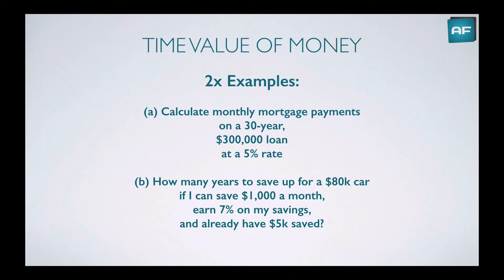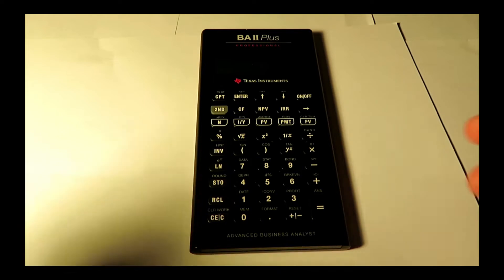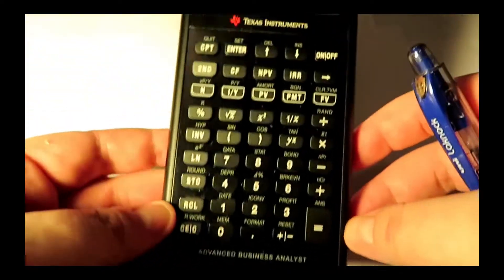Here are the examples we're going to go through in the live demonstrations. We're going to calculate the monthly mortgage payments on a 30-year $300,000 loan that has a 5% annual interest rate. The second example is we're going to work out how many years to save up for an $80,000 car, if I can save $1,000 a month at 7% of my savings, and I already have $5,000 saved. Now we're going to go through our live demonstration. Here we have a Texas Instruments BA2 Plus calculator, which is a type of financial calculator.